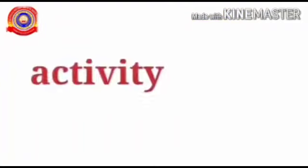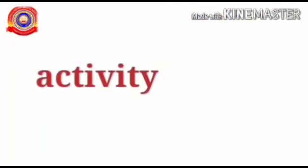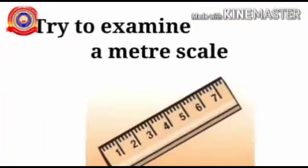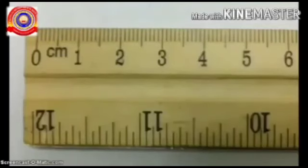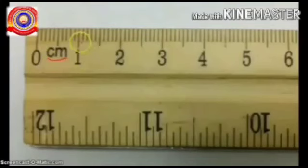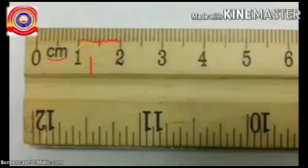To understand this, let us examine a meter scale — the scale that you use for geometrical purposes. When you observe this meter scale, it is divided into 100 equal parts. There are 100 thick lines, and one such thick line represents one centimeter. One centimeter is again divided into 10 equal parts using thin lines.